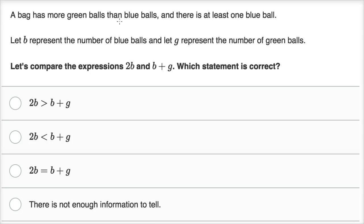A bag has more green balls than blue balls, and there is at least one blue ball. Let b represent the number of blue balls, and let g represent the number of green balls. Let's compare the expressions 2b and b plus g. Which statement is correct?